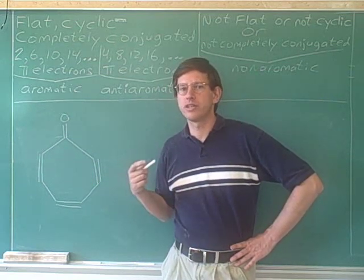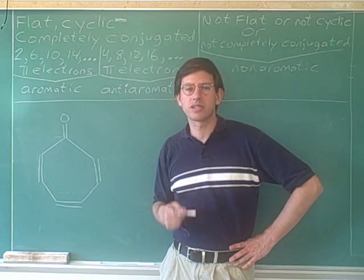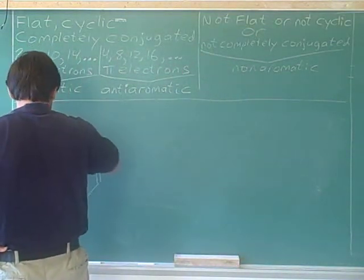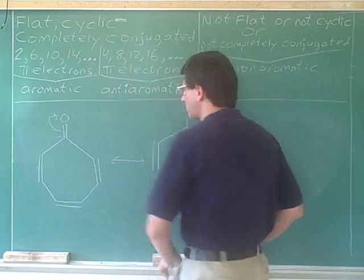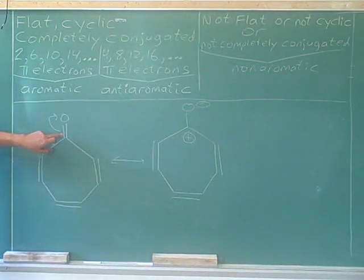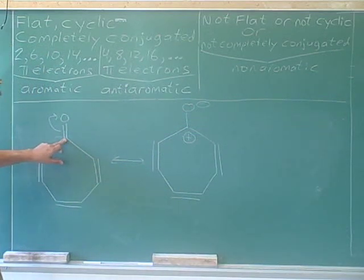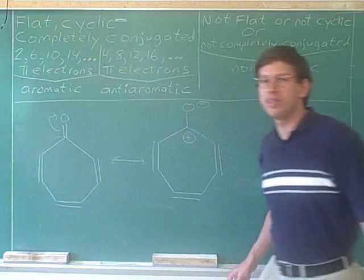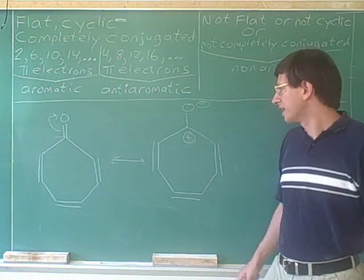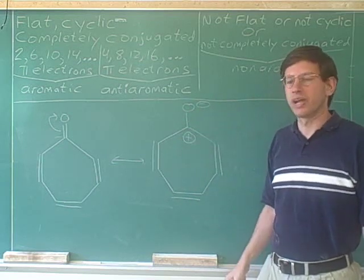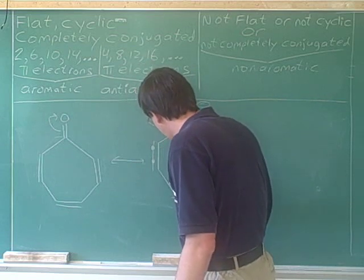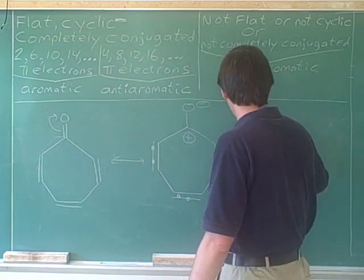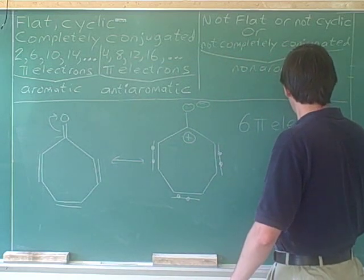The solution is to draw another resonance form where the electrons are not being shared. We take the pi electrons and push them up to the oxygen. That gives the oxygen a negative formal charge, and since the carbon lost the electrons, it ends up with a positive formal charge. In this picture, it's clear that those pi electrons are not part of the ring — they're clearly on the oxygen. So now we can count the pi electrons in the carbon-carbon pi bonds in the ring, which gives us six pi electrons.